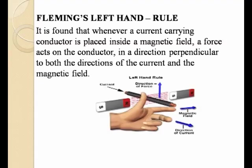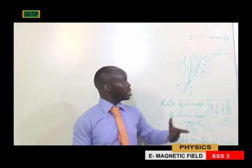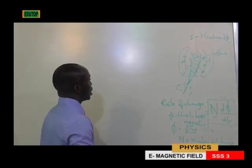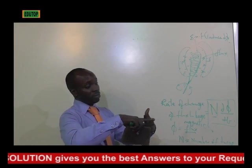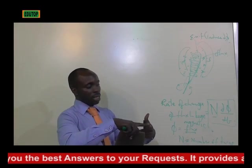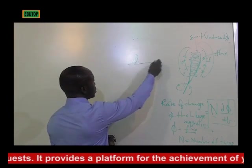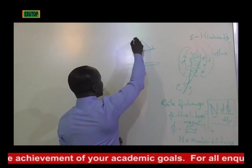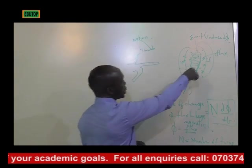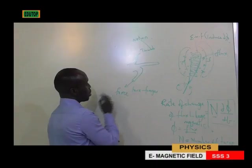Let's quickly go to what is meant by Fleming's left-hand rule and Fleming's right-hand rule. If you take your left hand and place it this way, you notice that you have three fingers: your thumb, your forefinger, and your first finger. Your thumb represents motion — the motion at which your coil goes.